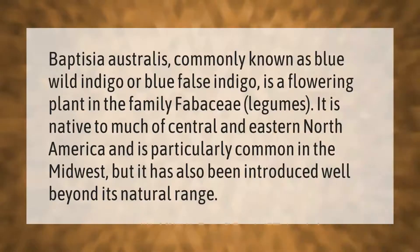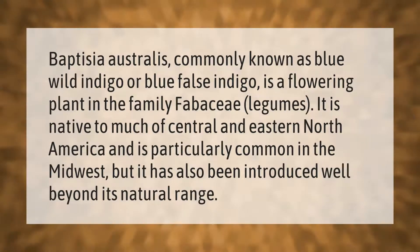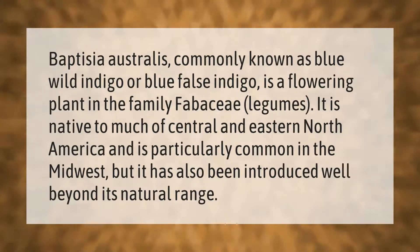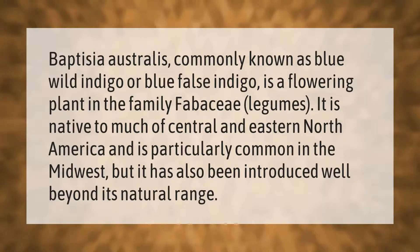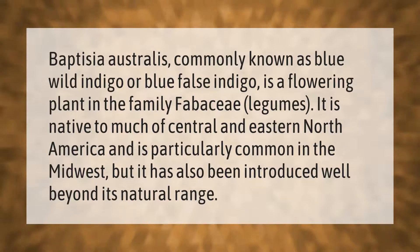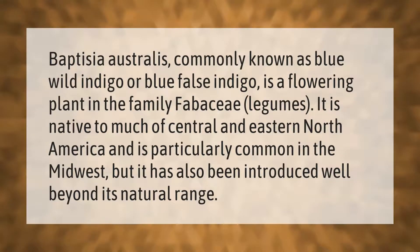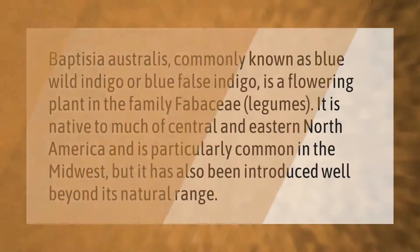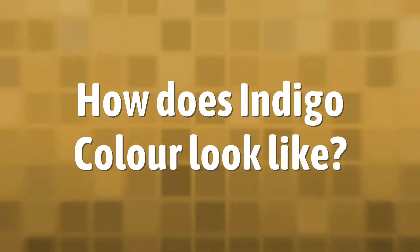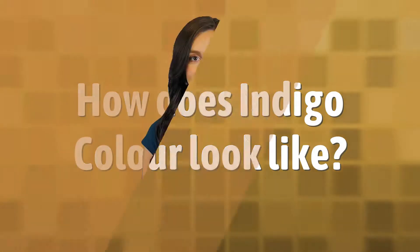Baptisia australis, commonly known as blue wild indigo or blue false indigo, is a flowering plant in the family Fabaceae (legumes). It is native to much of central and eastern North America and is particularly common in the Midwest, but it has also been introduced well beyond its natural range.